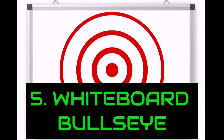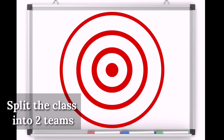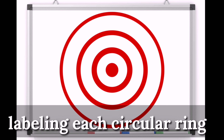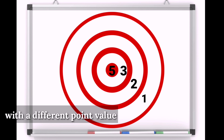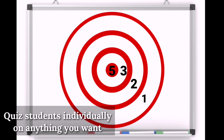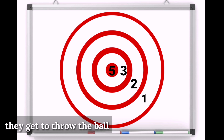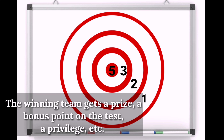Number 5: Whiteboard Bullseye. Split the class into two teams. Draw a target on the whiteboard, labeling each circular ring with a different point value. Quiz students individually on anything you want. If they answer correctly, they get to throw the ball at the target for points. The winning team gets a prize — a bonus point on the test, a privilege, etc.